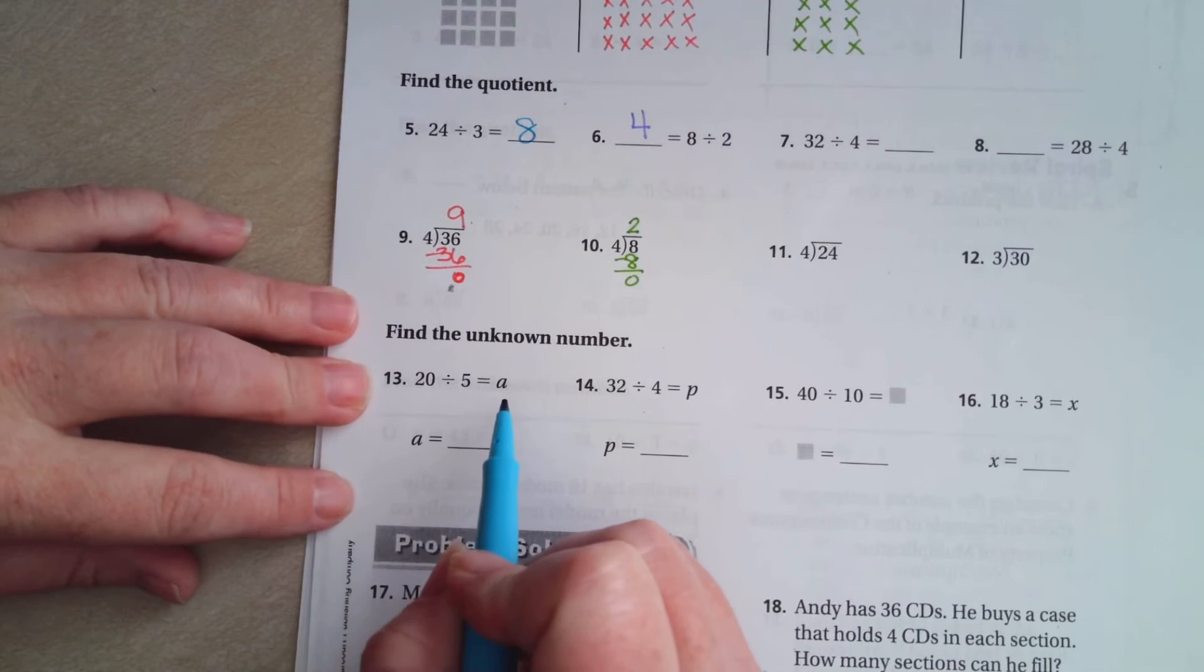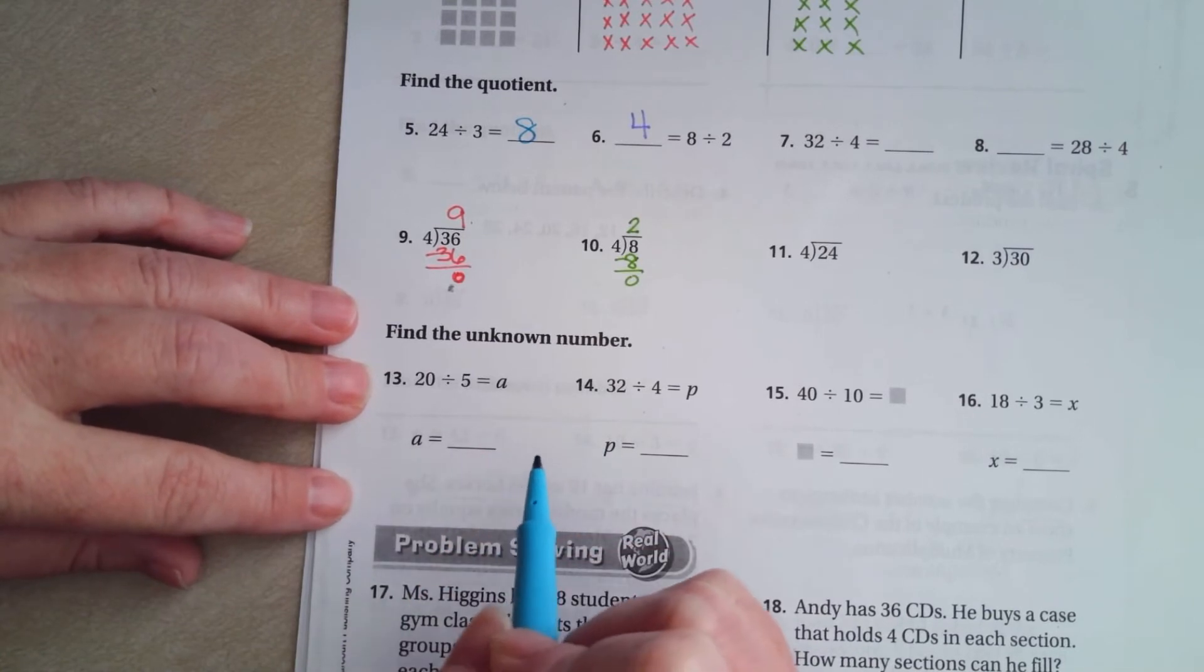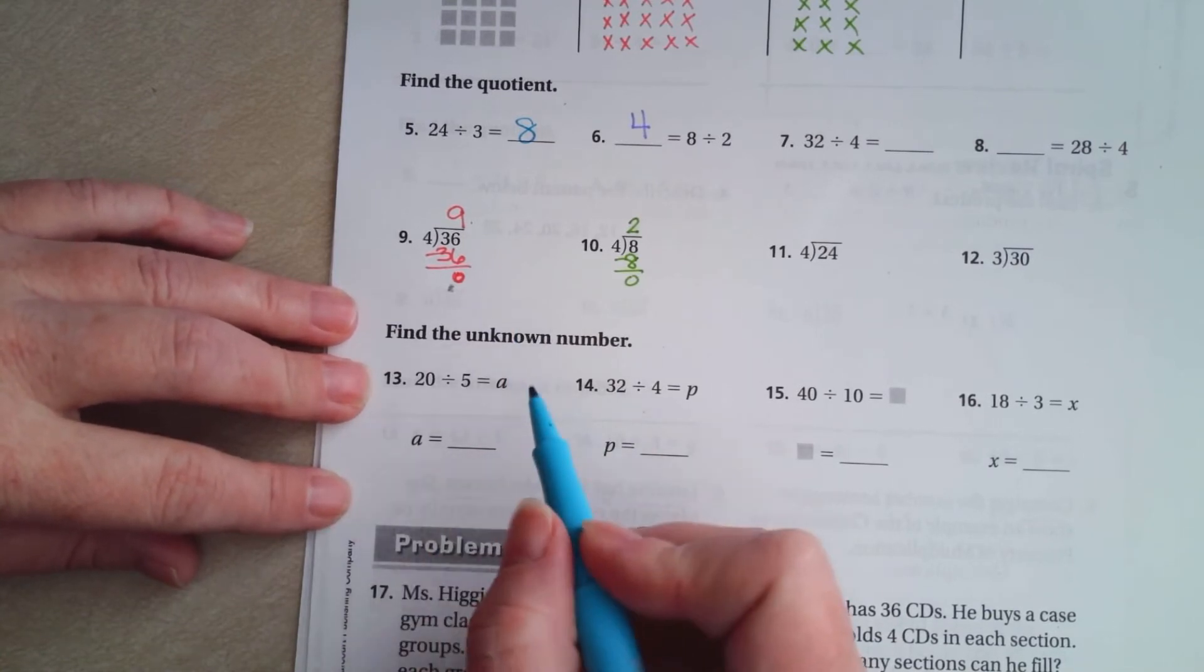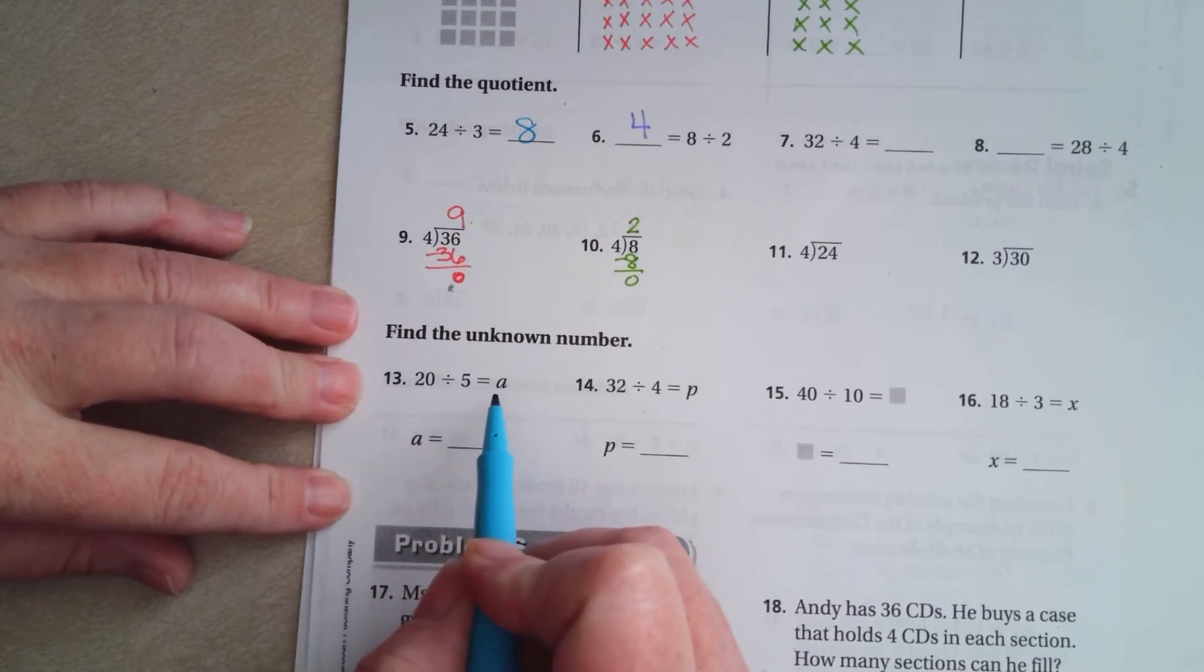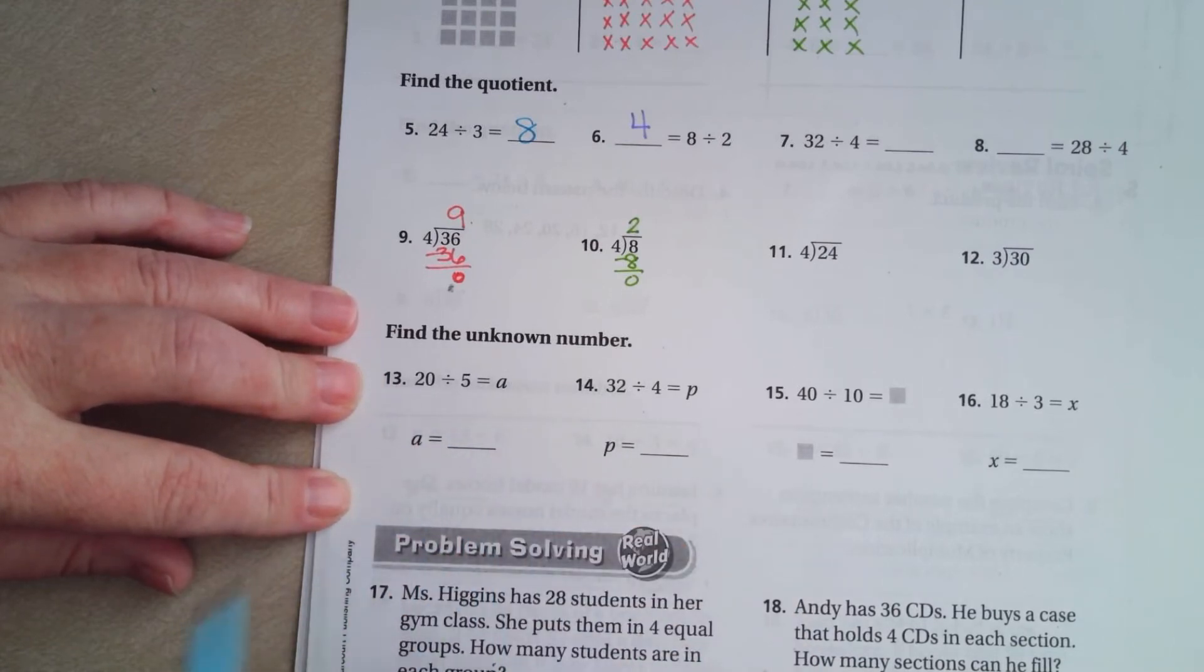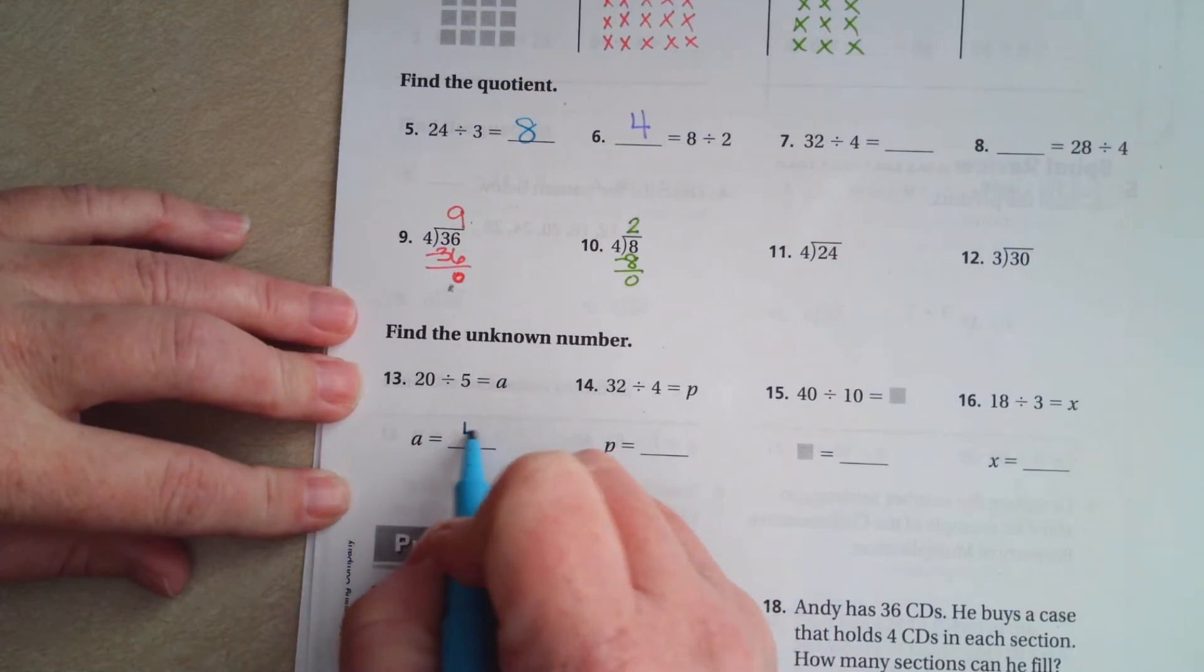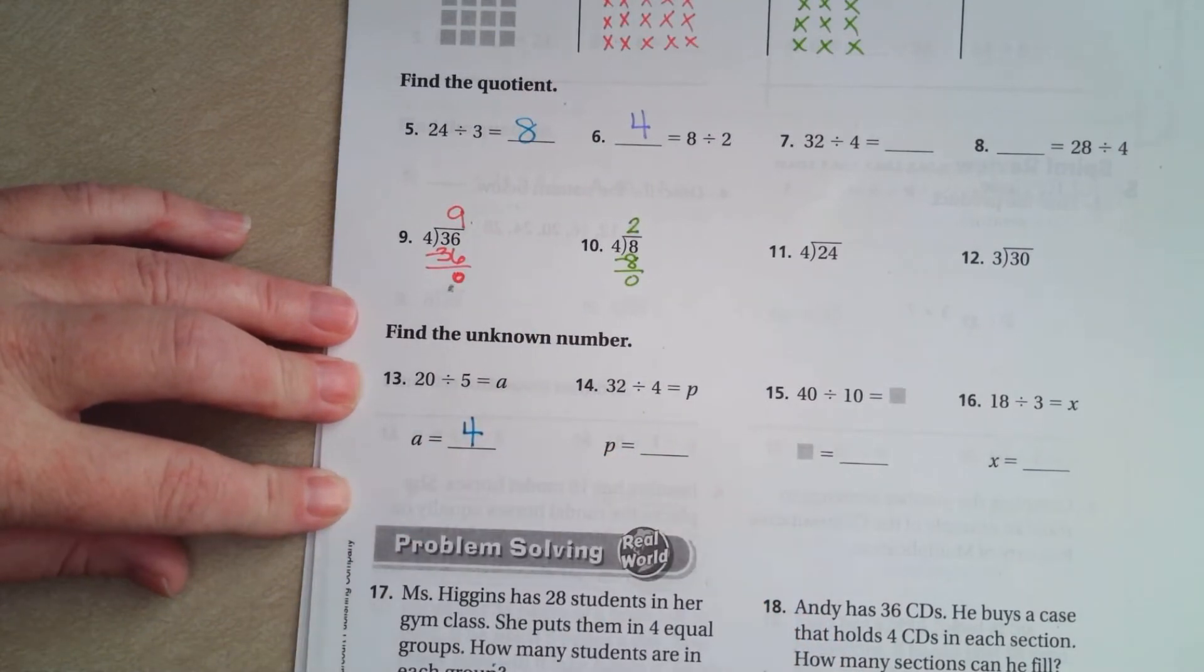This one, it's just throwing a letter in there to try to confuse you guys. It's nothing more than what you've already been doing. 20 divided by 5 is how much? So 5 times what is 20? Well, 5 times 4 is 20.